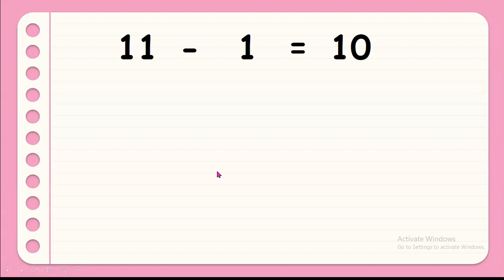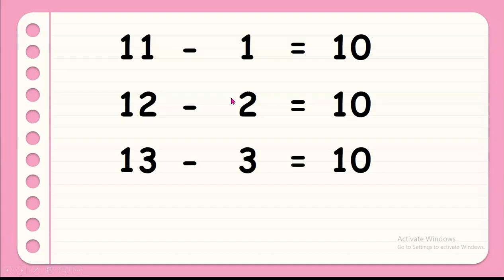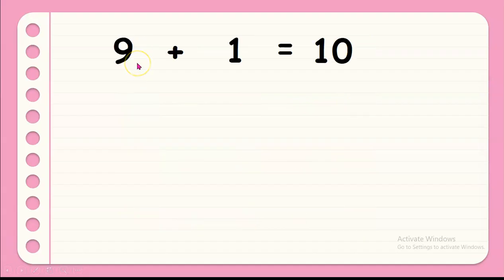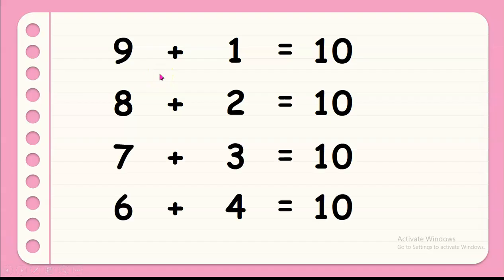Now, these are other possible number sentences in subtraction that we may also use as equivalent number expressions like 11 minus 1 equals 10, 12 minus 2 equals 10, 13 minus 3 equals 10, and 14 minus 4 equals 10. So, these are all subtraction number sentences. Now, compared with 9 plus 1 equals 10, 8 plus 2 equals 10, 7 plus 3 equals 10, and 6 plus 4 equals 10, these are also possible addition number sentences and used as equivalent expressions.